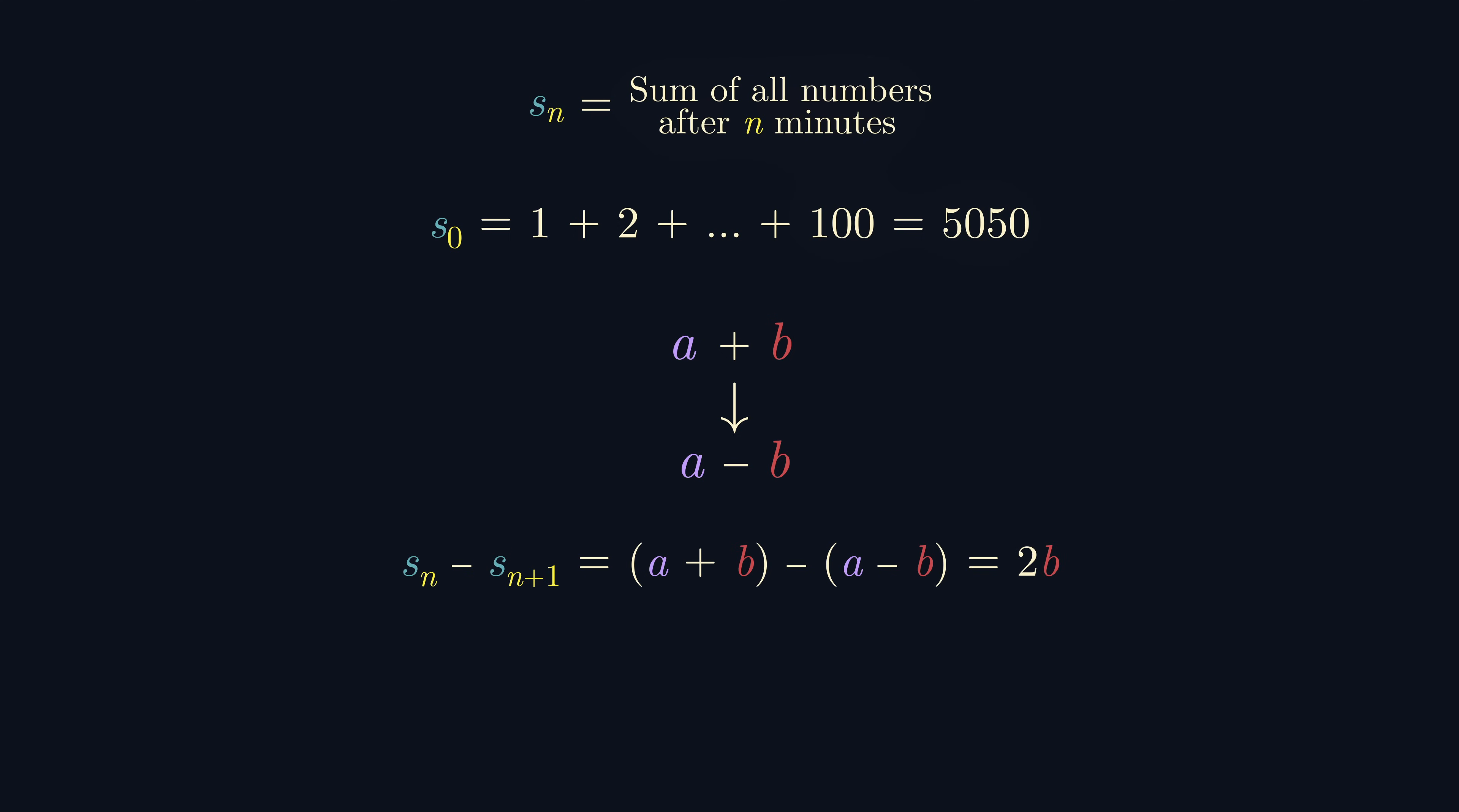Importantly, we should note that 2b is even. So no matter what, since we started at 5050, which is even, and subtract an even number from the sum each time, this sum is going to stay even.